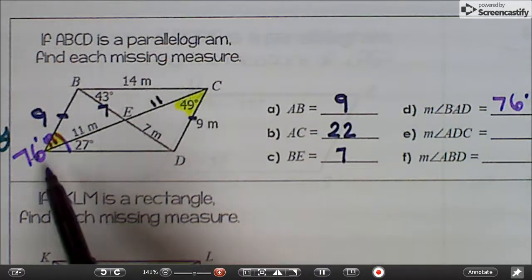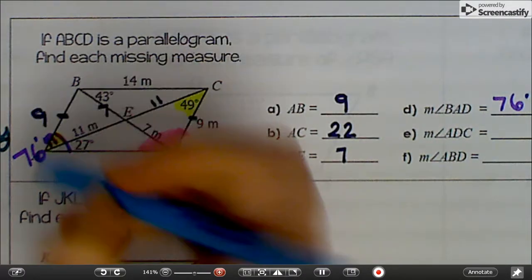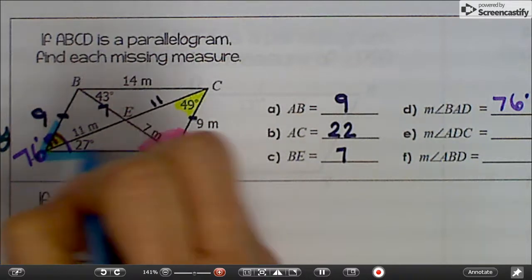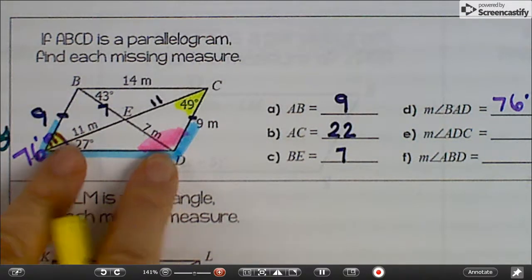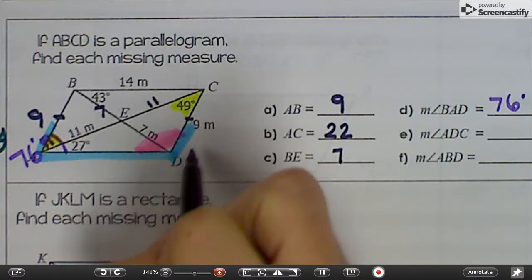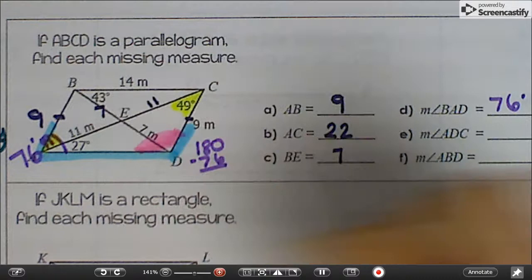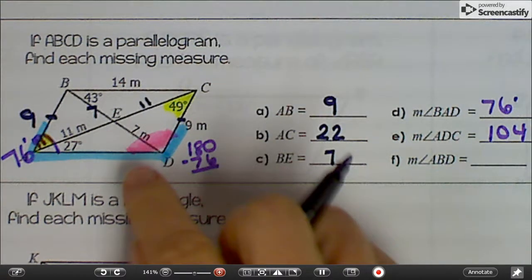Angle ADC, A-D-C is this whole spot right here. One of the rules of parallelograms or properties is that consecutive angles are supplementary. I'm kind of outlining those two, the yellow one over on this side and this one here. These have to be supplementary. If this one is 76, then this one would have to be 180 minus 76, which is 104 degrees. That's the whole pink angle.